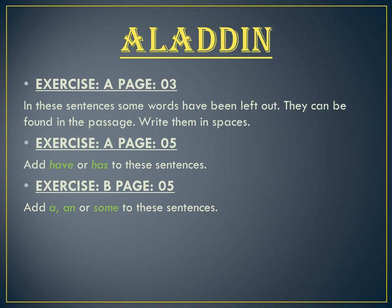Starting with our very first chapter, that is 'Aladdin,' in which you will have to do Exercise A of page number 3. In this exercise you will have to add some words which have been left out — they can be found in the passage and you will write them in the spaces. This is a fill-in-the-blanks format exercise. There is another exercise, Exercise A of page number 5, in which you will have to add 'have' or 'has' to the sentences. Next is Exercise B of page number 5, where you will have to add 'a,' 'and,' or 'some' to the sentences.